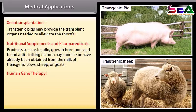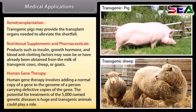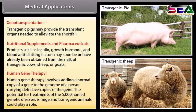Human gene therapy involves adding a normal copy of a gene to the genome of a person carrying defective copies of the gene. The potential for treatments of the 5,000 named genetic diseases is huge, and transgenic animals could play a role.